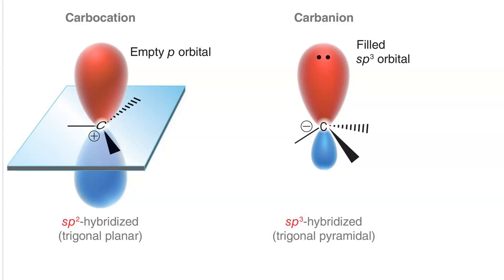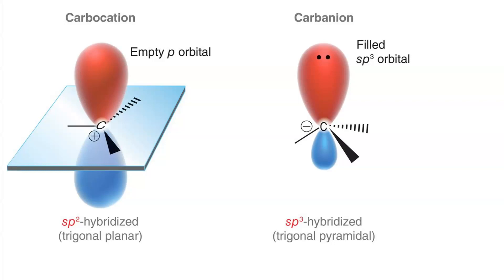You can think of the radical as having an orbital that's between p and sp3 that is singly occupied. So you can think of it as either being trigonal planar or a shallow pyramid that inverts rapidly.